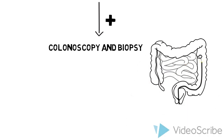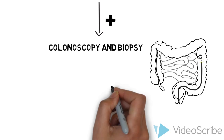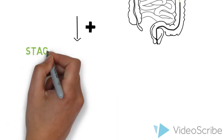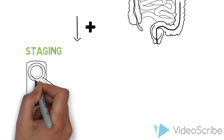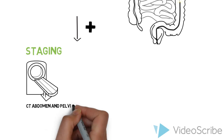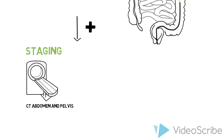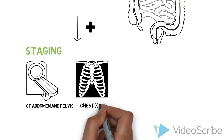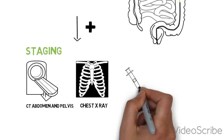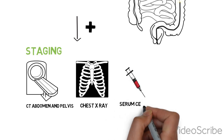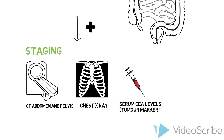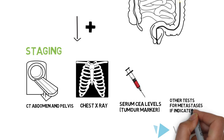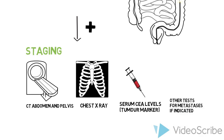If the biopsy confirms colorectal cancer, staging investigations may be done, which may include a CT scan of the abdomen and pelvis, chest X-ray, or other imaging tests, as well as serum CEA levels and tests for metastases if clinically indicated.